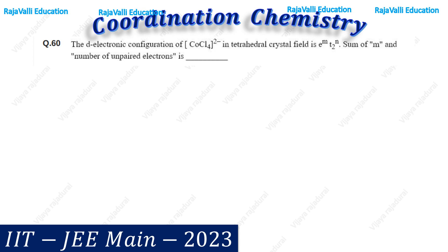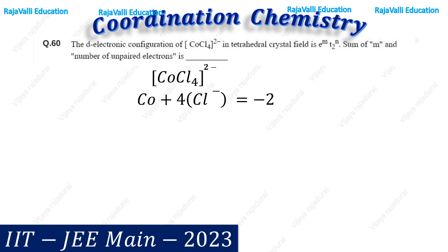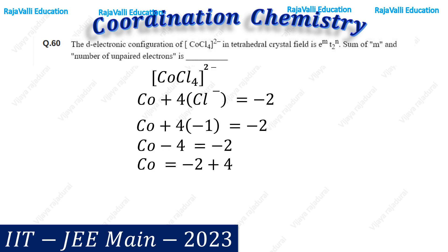First, we have to find out the oxidation state of cobalt in CoCl₄²⁻. We can write: Co + 4Cl⁻ = −2. We know the oxidation state of chloride is −1. Substituting these values and solving, we get +2. So the oxidation state of cobalt in this complex is +2.